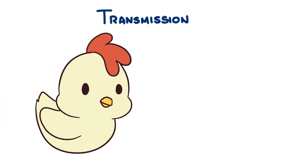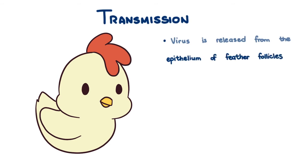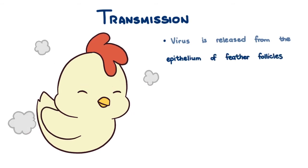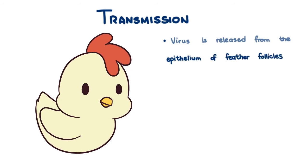Transmission of Gallid herpesvirus 2 is pretty interesting. Chickens are infected by inhalation of feather dust or dander from an infected bird. This is because in the infected chicken, the virus is released from the epithelium of feather follicles. The dust can fall on the litter and the virus can survive there for months.